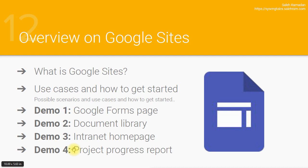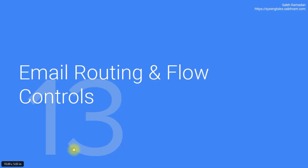That's it for Google Sites and the last demo. Hopefully this gave you some insights on what you can do and the ways to let users get more out of Google Workspace services. I'll share the resources for this demo so you can use and expand on them. Next, I'll be talking about email flow controls — routing rules, content compliance rules — a very interesting and advanced topic you must be aware of.